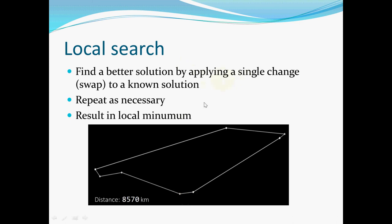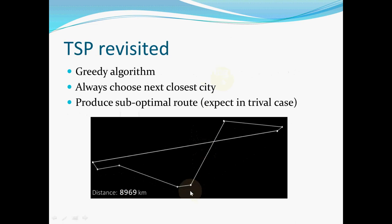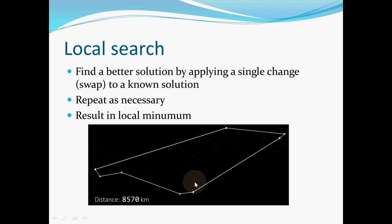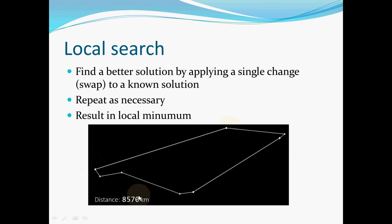Using a local search algorithm, we can find a better solution by applying a single change to the existing solution each time. For example, this point is connected to this point, and this point is connected to another point. By conducting a single change — connecting this point to a different point and reconnecting the other — the resulting distance is smaller, so it is a better solution.